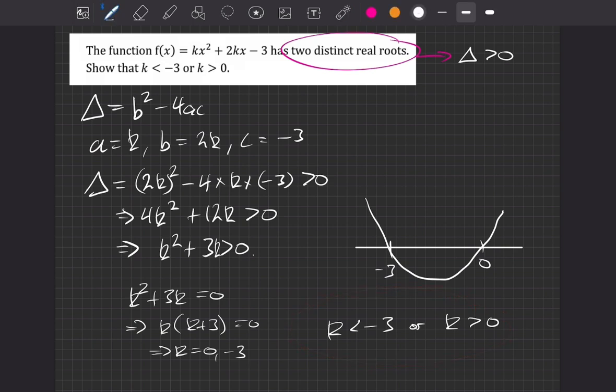We could write this instead using the union. So like k is less than minus 3, union k is positive. But it doesn't make too much of a difference. It just means or, but a different way of writing it. Hope that all made sense. Thank you very much.